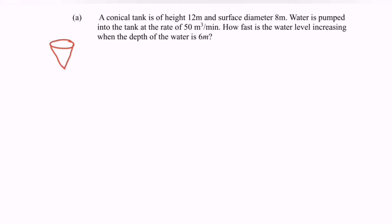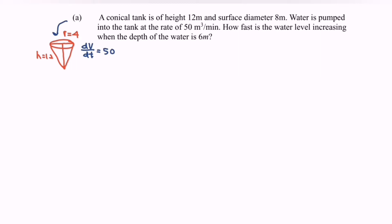The conical tank has a height h = 12 meters and a surface diameter of 8, so the radius r = 4 meters. Water is pumped into the tank, so we have dV/dt = 50 cubic meters per minute.